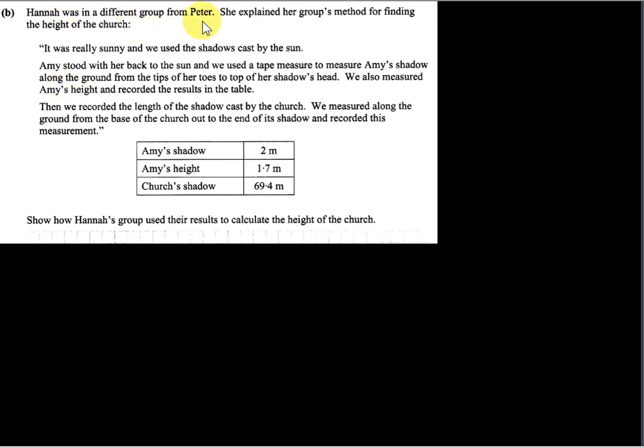Hannah was in a different group from Peter. She explained her group's method for finding the height of the church. It was really sunny and we used the shadows cast by the sun. Amy stood with her back to the sun and we used a tape measure to measure Amy's shadow along the ground from the tips of her toes to the top of her shadow's head. We also measured Amy's height and recorded the results in the table. Then we recorded the length of the shadow cast by the church. We measured along the ground from the base of the church out to the end of its shadow and recorded this measurement.